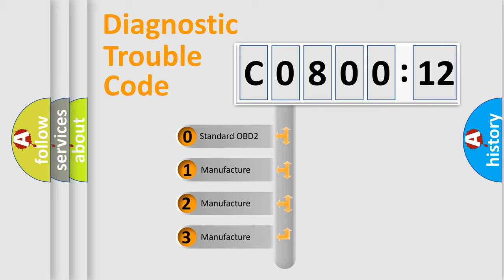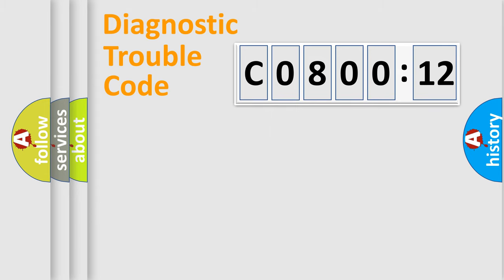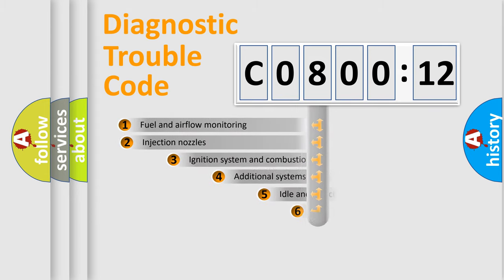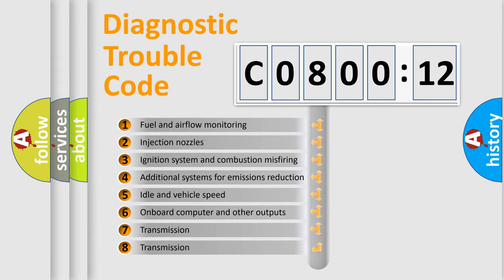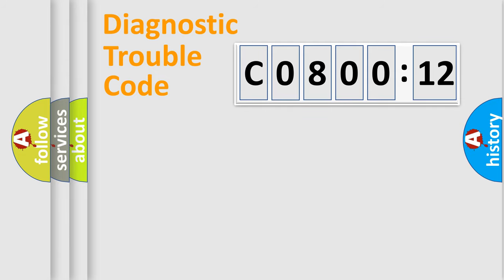If the second character is expressed as 0, it is a standardized error. In the case of numbers 1, 2, 3, it is a more prestigious expression of the car-specific error. The third character specifies a subset of errors. The distribution shown is valid only for the standardized DTC code.